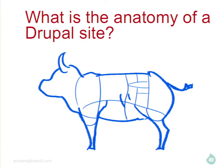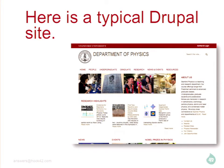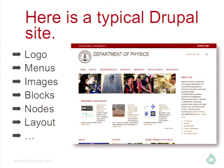We're going to talk about the anatomy of a Drupal site so we can pull pieces apart and figure out how to do translations. We're looking at a very simple Stanford site — it's got all the typical things: logo, menus, blocks, nodes. Those are the types of things you have to deal with — views, panels, field collections, that kind of stuff. These are the types of things you're going to run into.